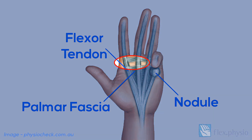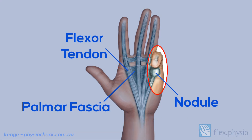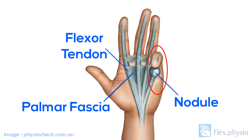Any digit can be affected, though for some reason the ring and little fingers are most likely. This thickening pulls tighter, forming fibrous nodules or cords, which may eventually pull the affected digit down into a bent position. This process may take many years.